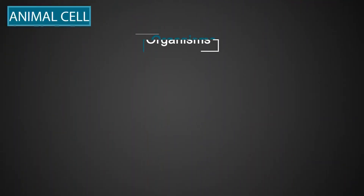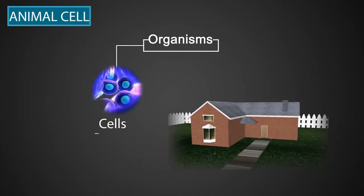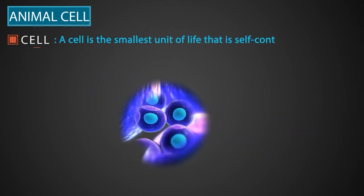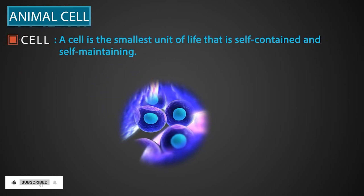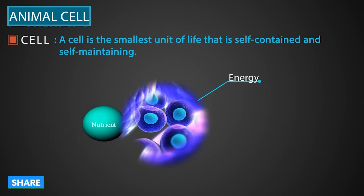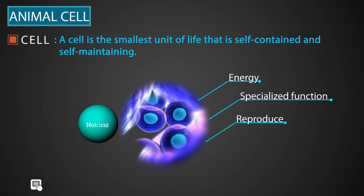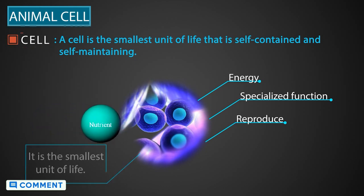We know all organisms are made up of cells, like a house is made up of bricks. A cell is the smallest unit of life that is self-contained and self-maintaining. It can take in nutrients, convert these nutrients into energy, carry out specialized functions, and can also reproduce. So, it is the smallest unit of life.